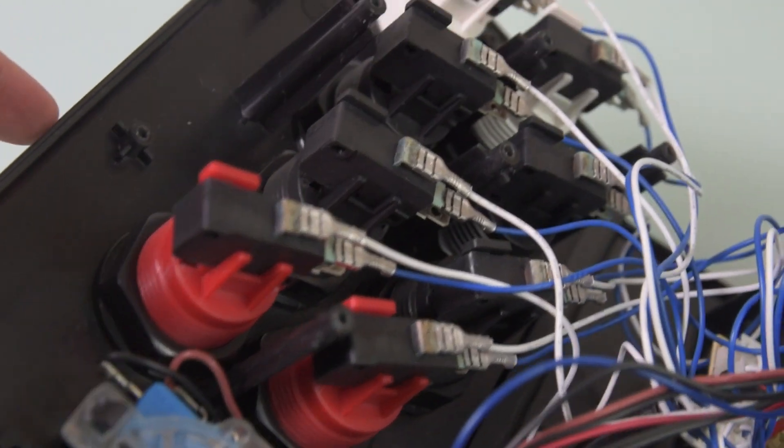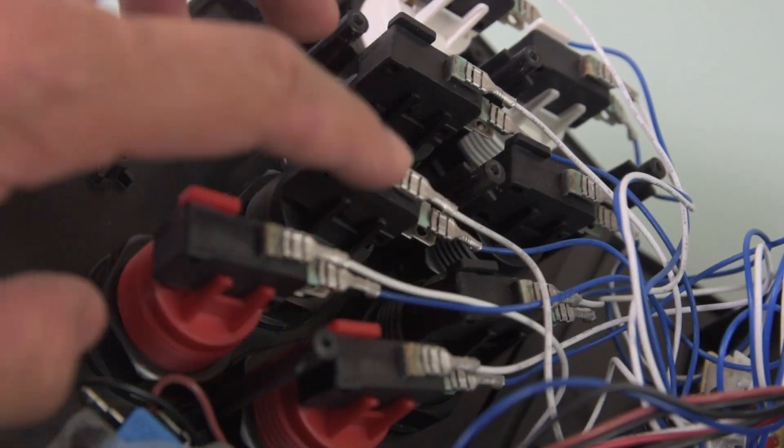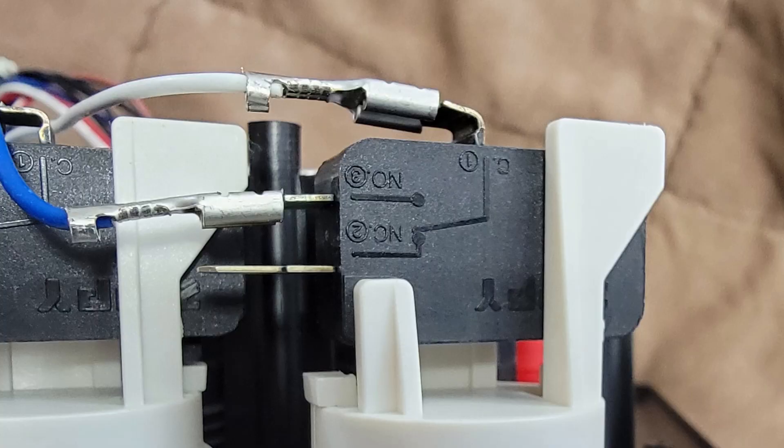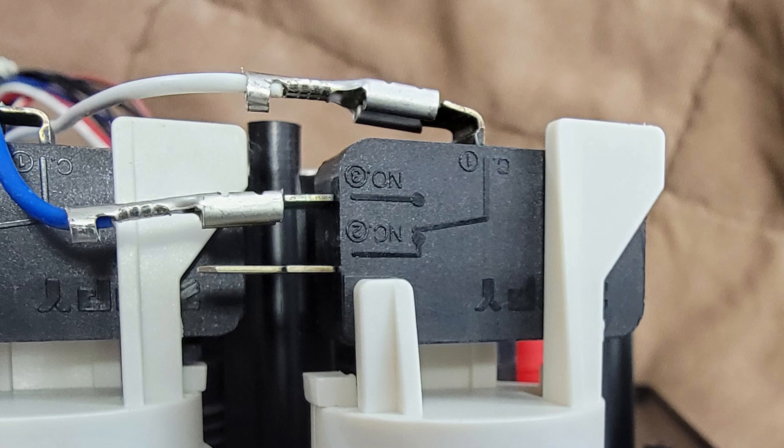Then I started inspecting the connectors on the arcade stick and buttons. On each button and stick direction, there are three connectors with one not being used. I needed to figure out which one is ground and which one is for the button action.